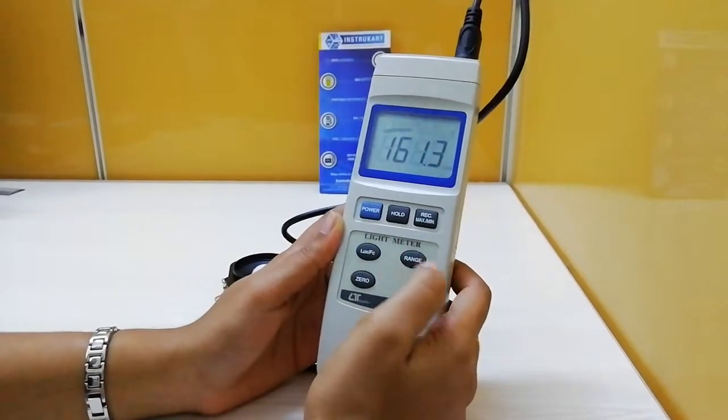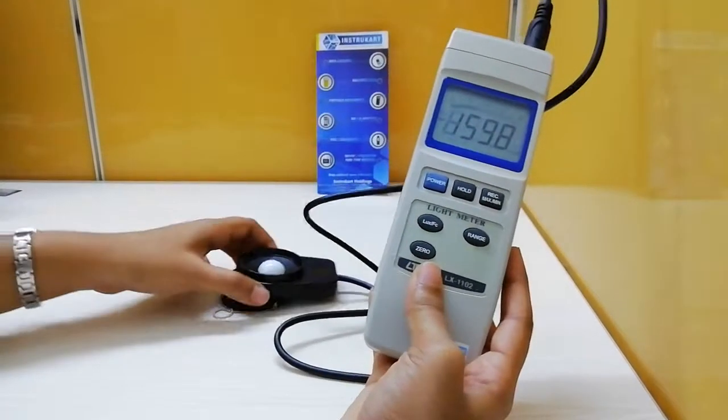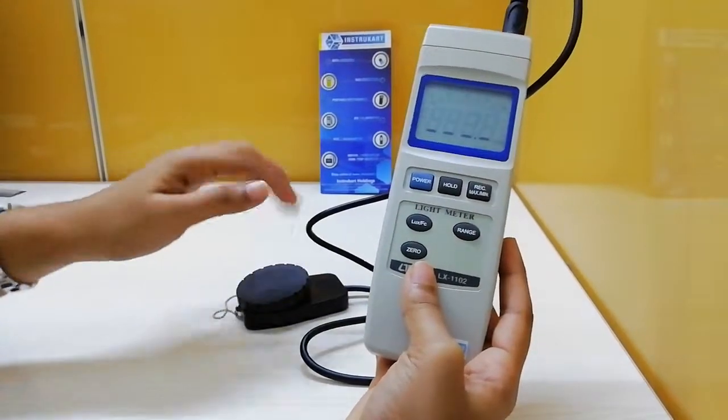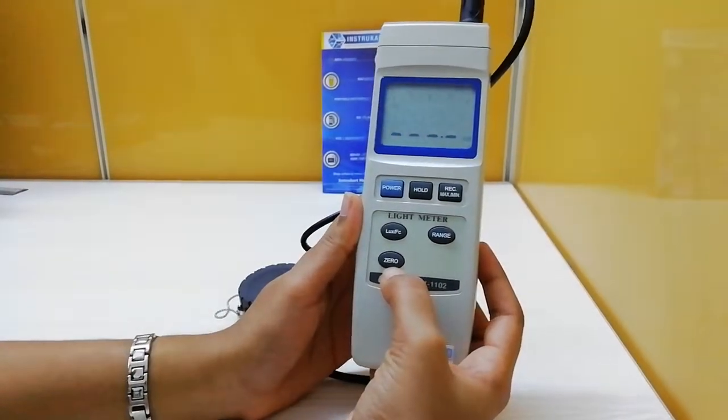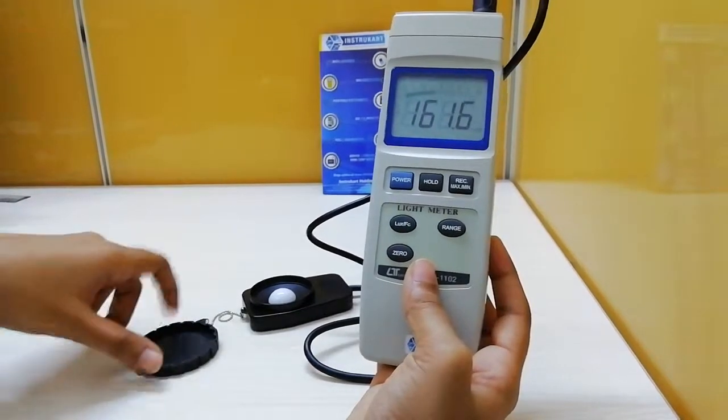To use the device, turn on the instrument and set the range. For zero adjustment, cover the sensor with the sensor cover and close it. Then you can perform the zero adjustment while the sensor is covered.